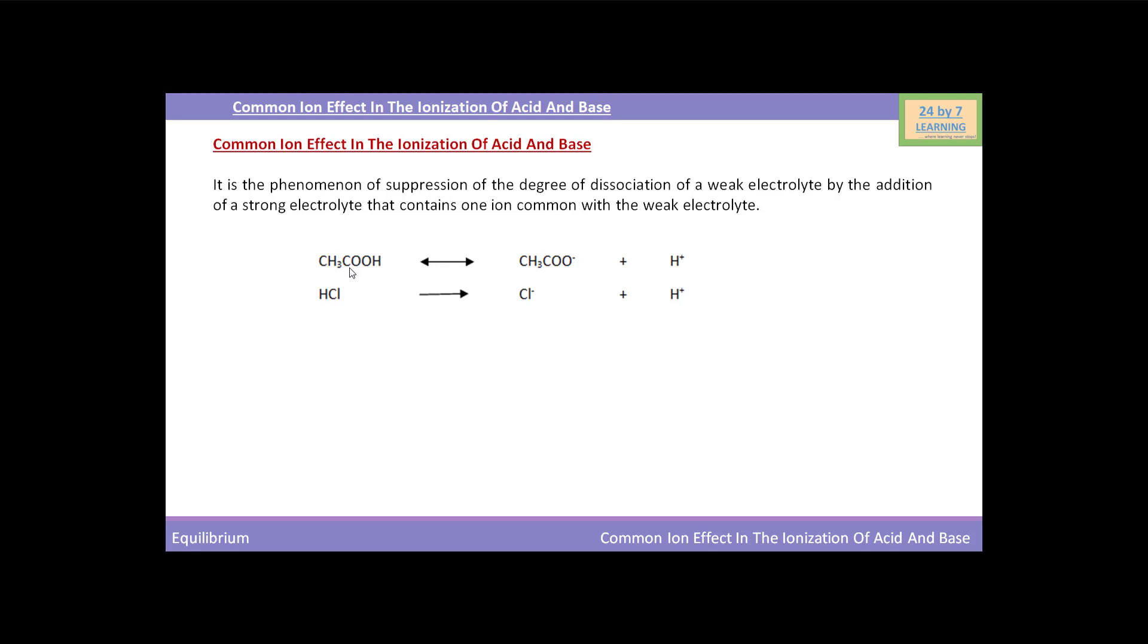If HCl is added to the solution of acetic acid, they both possess common hydrogen ion. Acetic acid dissociates and produces acetate ion plus hydrogen ion. If hydrogen ions are added to the solution from any other source like HCl, they will combine with acetate ions in the solution and form unionized acetic acid.